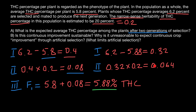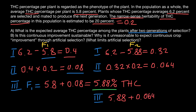As you see, improvement goes down. We got some improvement for the F2 generation compared to F1, but the percentage of improvement decreased. Step three for F2: the base population is 5.88% plus 0.064. So in the F2 generation, the mean THC content of the population is going to be 5.944%. This is the answer to the first question.